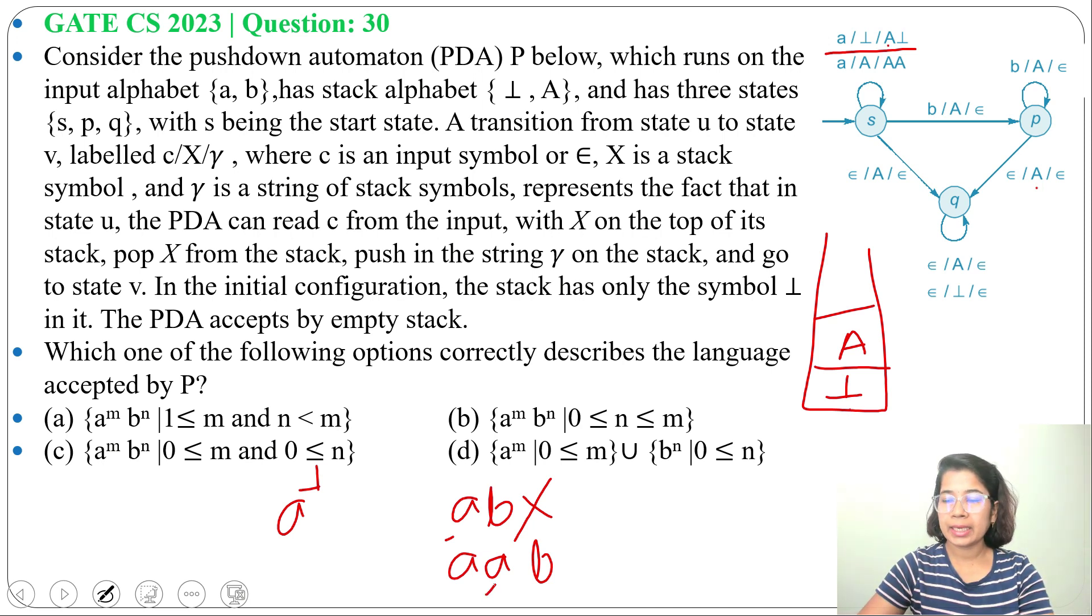Then for B, from S, it will go to state P and pop A. For input symbol B, it will pop the stack symbol A and go to state P.